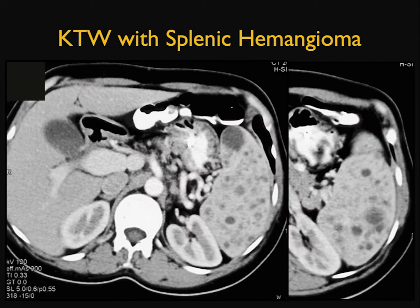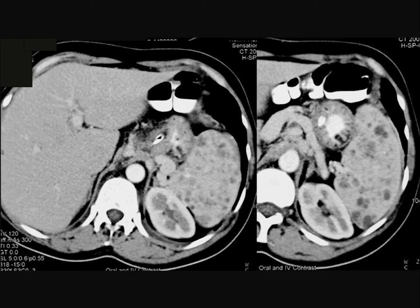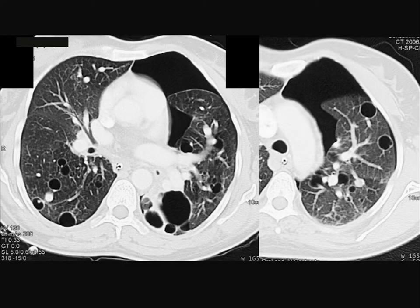I mentioned Klippel-Trenaunay-Weber. Look at these multiple splenic hemangiomas. If I told you the patient was febrile, you could think about abscess. If I told you the patient had weight loss and fever, you could think about malignancy. So these are indeed all going to be possibilities. Patients with Klippel-Trenaunay-Weber also get cysts in the lung and spontaneous pneumothoraces.